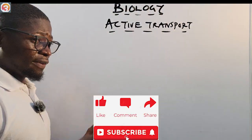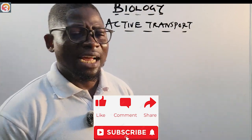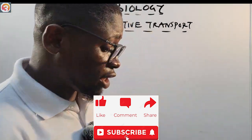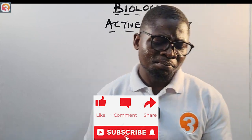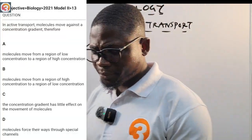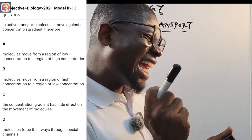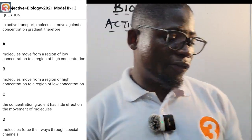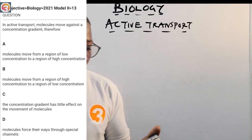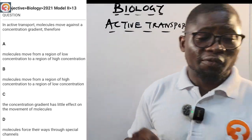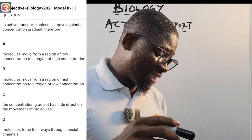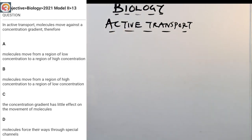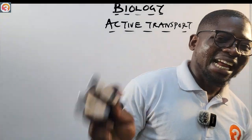Let's look at active transport. Please like this video if you haven't, and subscribe to this channel. Before I explain active transport, here's a 2021 JAMB question, number 13: 'In active transport, molecules move against a concentration gradient. Therefore — A: molecules move from a region of low concentration to a region of high concentration; B: molecules move from a region of high concentration to a region of low concentration; C: the concentration gradient has little effect on the movement of molecules; D: molecules force their way through special channels.' We'll answer this at the end of class.